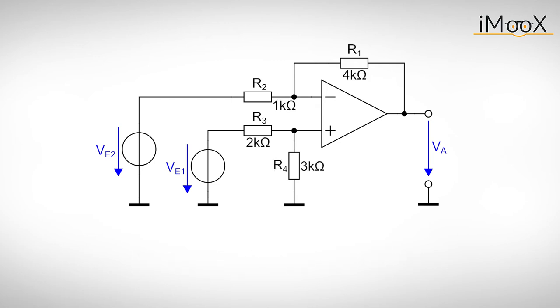For example, let's assume R1 is 4k, R2 is 1k, R3 is 2k and R4 is 3k. The output voltage would be 3ve1 minus 4ve2.